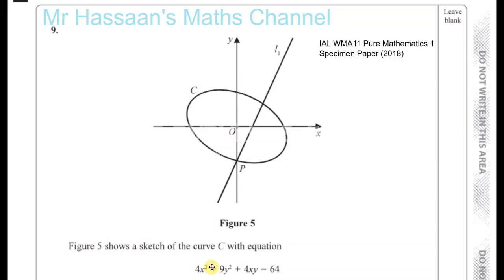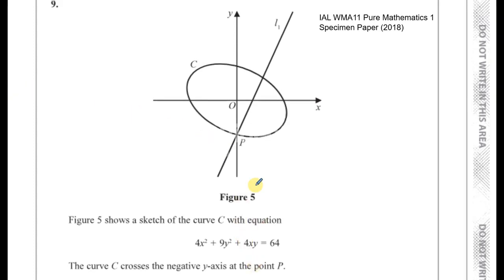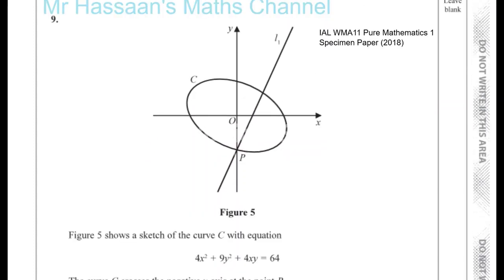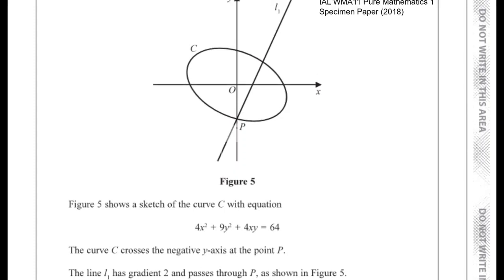Question number 9 from the Pure Maths 1 specimen paper for the International A-Level IAL. Here we have a sketch of a curve C, kind of like an ellipse or oval type of shape. The curve crosses the negative y-axis at the point P. We're told the line L1 is a straight line with a gradient of 2 and passes through P. So the gradient of line L1 is equal to 2, and it passes through P, which is where the curve crosses the negative y-axis.